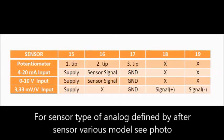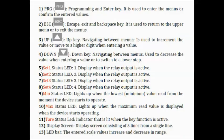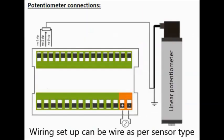For sensor type of analog defined by sensor model you can see the photo. This is front panel definition and the numbers will explain what they are, following the previous picture.